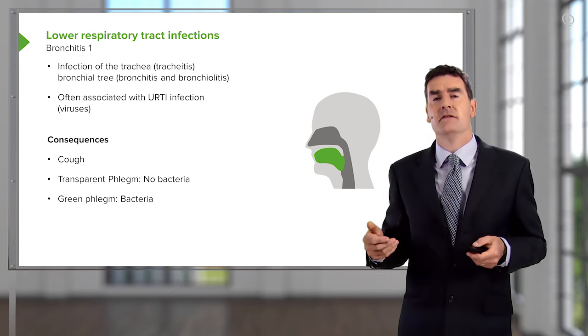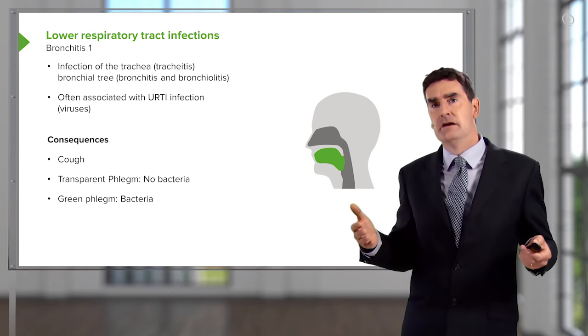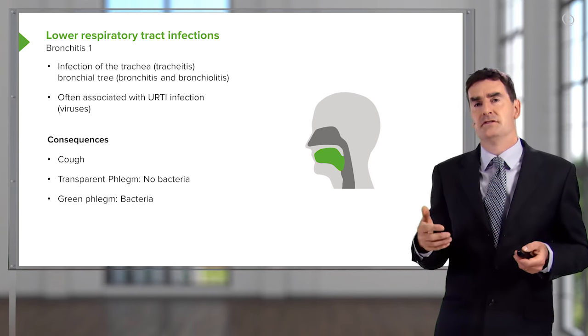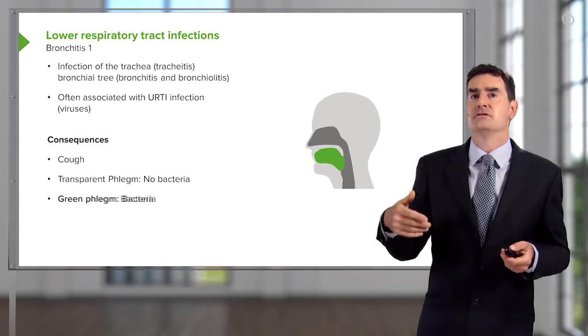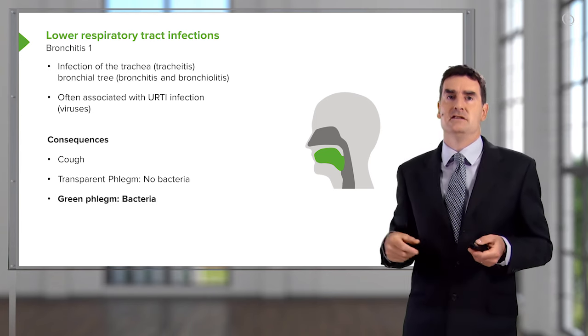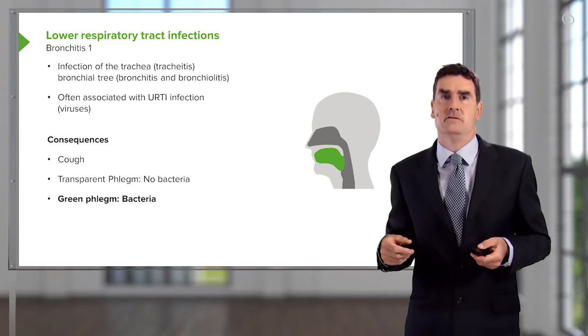Generally speaking, if the phlegm is clear in colour, there's not a bacterial infection. But if the phlegm is green, gunky, and thick, then it's likely to be due to a bacterial infection.